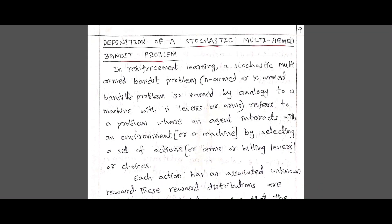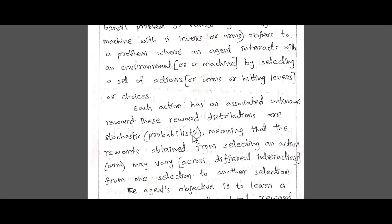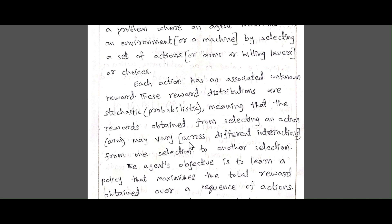In reinforcement learning, the stochastic multi-armed bandit problem refers to a problem where an agent interacts with an environment by selecting a set of actions — meaning he selects or hits the levers or arms of the machine — and the main aim is to get the maximum reward. Each action has an associated unknown reward; the agent playing the slot machine doesn't know what reward is associated with every action, so they are just allowed to play the game.